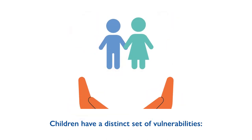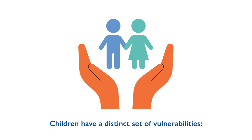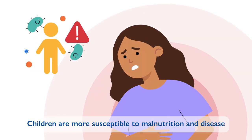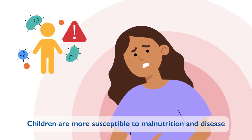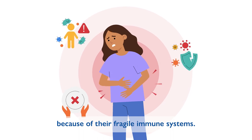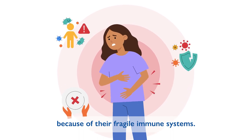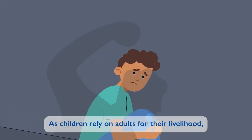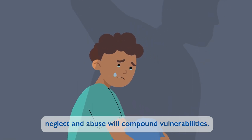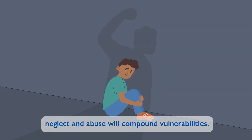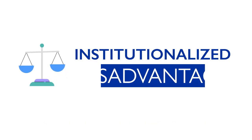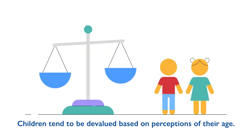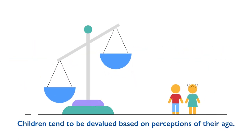Children have a distinct set of vulnerabilities. Physically, children are more susceptible to malnutrition and disease because of their fragile immune systems. In terms of dependency, as children rely on adults for their livelihood, neglect and abuse will compound vulnerabilities. Institutionalized disadvantage means children tend to be devalued based on perceptions of their age.